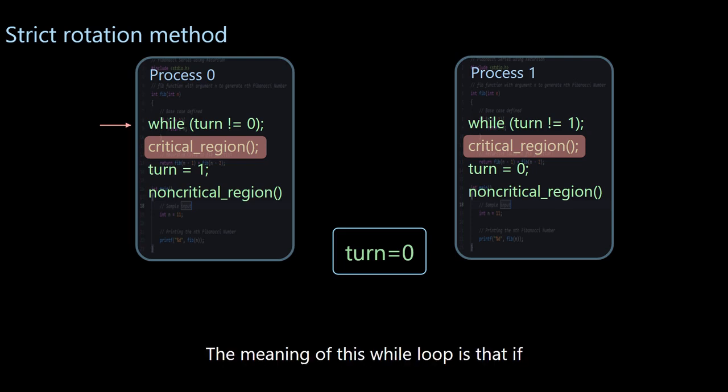The meaning of this while loop is that if the turn variable is not 0, it will always wait in this line of loops. And now turn is actually 0. So go directly to the next line, which is the critical section.